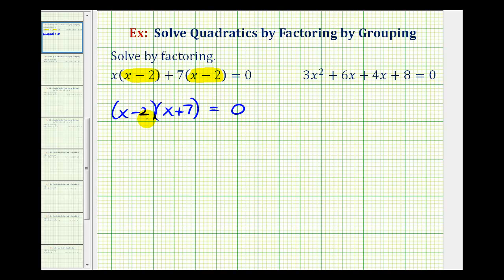So now we can use the zero product property to solve this equation. If this product is equal to 0, then the first factor of x minus 2 must equal 0 or the second factor of x plus 7 must equal 0. So here if we add 2 to both sides of the equation, we would have x equals positive 2. And for this equation, if we subtract 7 on both sides, we would have the solution x equals negative 7. So these would be the two solutions to the original quadratic equation.